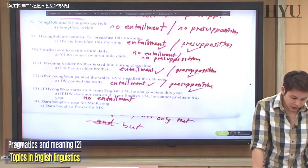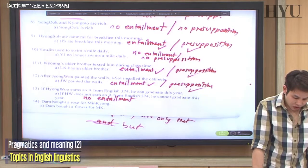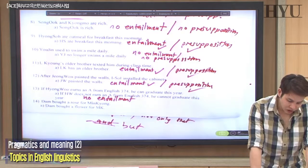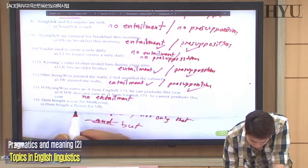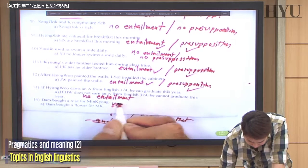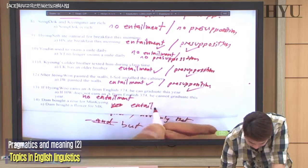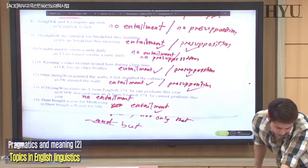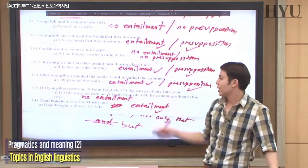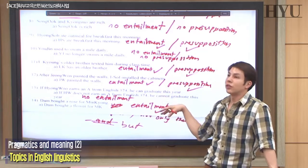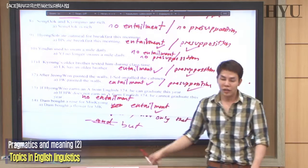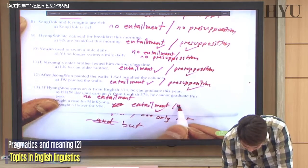Number fourteen: 'Tam bought a rose from Minkyeong' and 'Tam bought a flower for Minkyeong.' For the entailment, yes — a rose is a flower. And there's no presupposition because if you question it — 'Did Tam buy a rose?' — that statement no longer holds. So no presupposition.